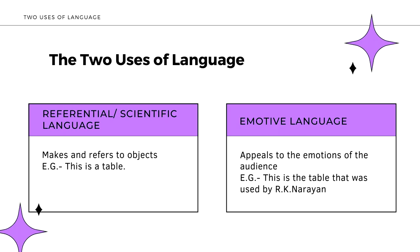The first is the scientific or referential use of language, and the second is the emotive use of language. The scientific or referential use of language helps in recalling objects, or rather merely mentions objects. The emotive use of language, on the other hand, gives us feelings — it evokes in listeners and the audience a sense of feeling.